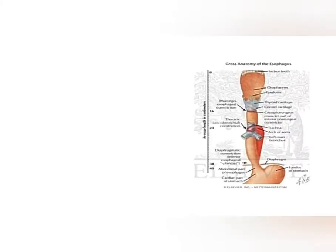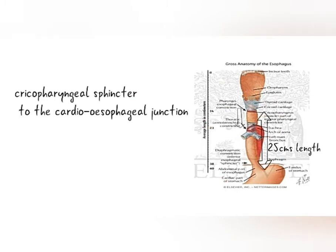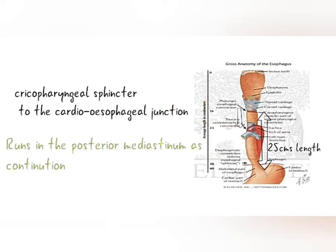Esophagus is 20cm in length, which starts at the cricopharyngeal sphincter and ends at the cardioesophageal junction. It runs in the posterior mediastinum as a continuation of the pharynx. 2cm of this tube lies below the diaphragm.